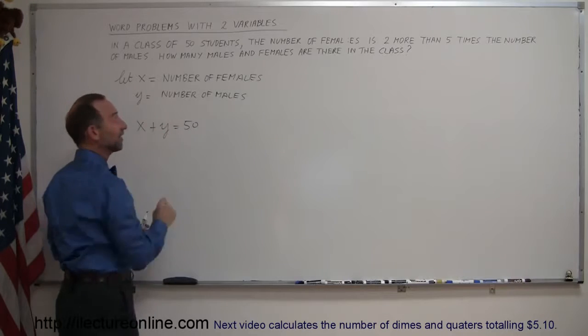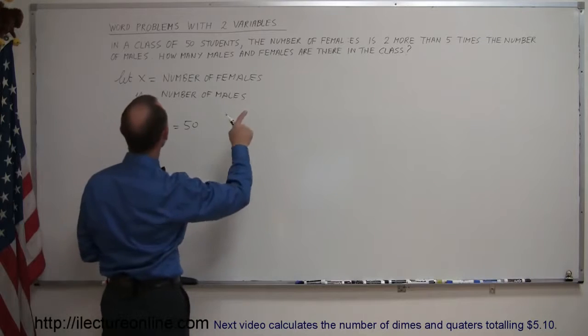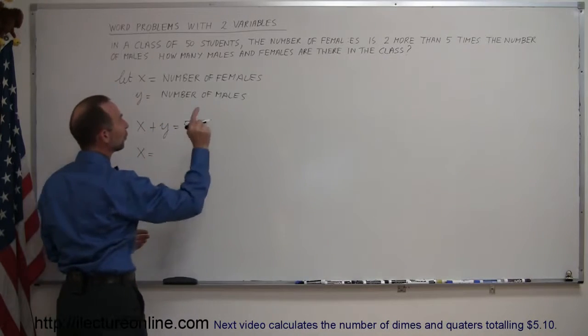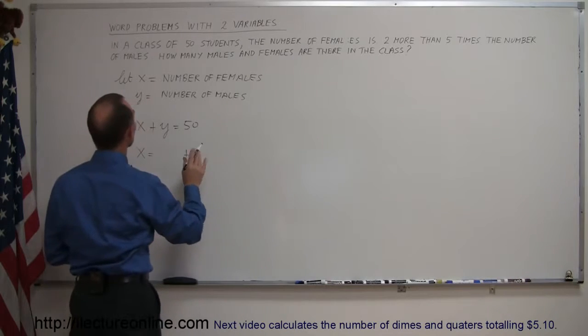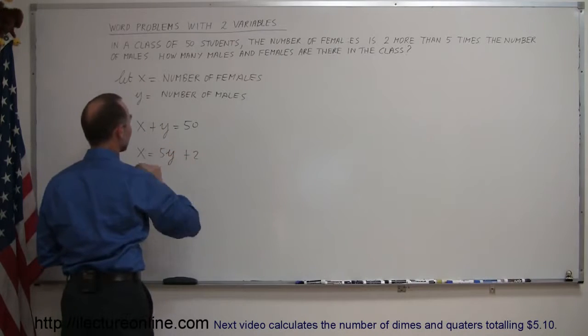Y represents, see that's why it's so important to very carefully define your variables. It says the number of females, and the number of females is x, so x is equal to two more, plus two, five times the number of males, and the number of males is y, so five times y plus two.